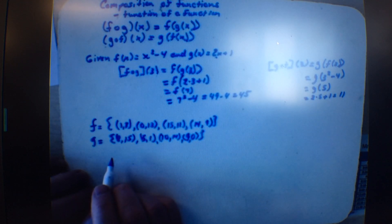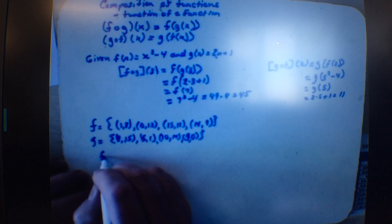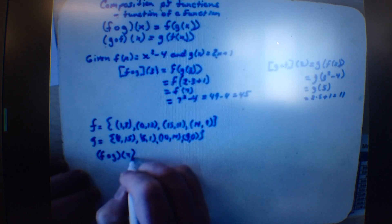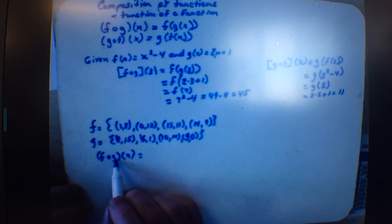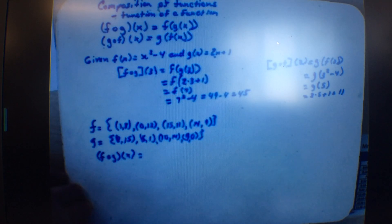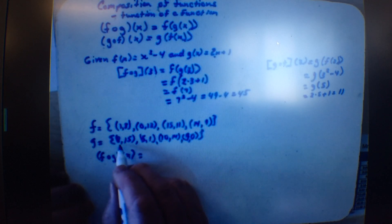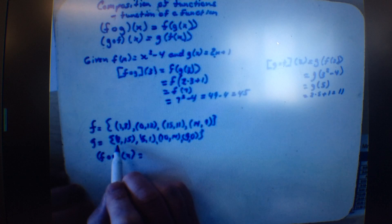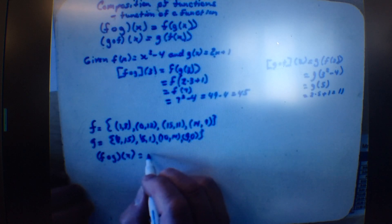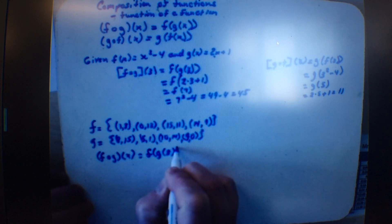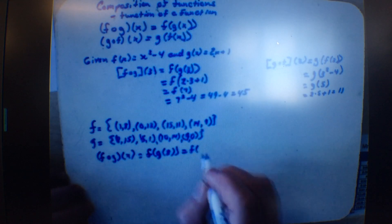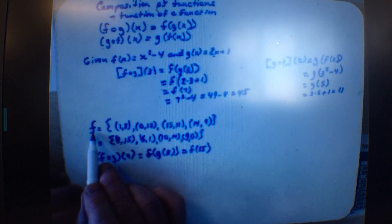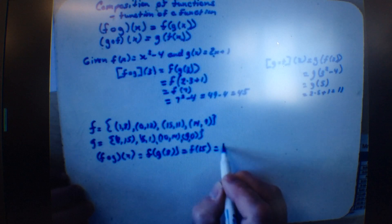We want to find all the values of f of g of x. We start with the g function — it's almost like reading right to left. The first x in g is 8. So we go f of g of 8: g of 8 is 15. Then we go up to the f function and find f of 15, which gives 11. So your answer is 11.